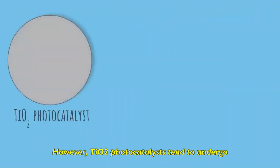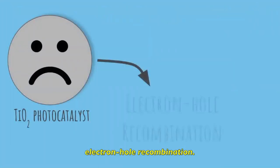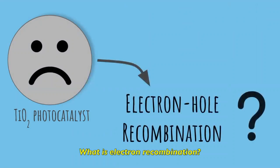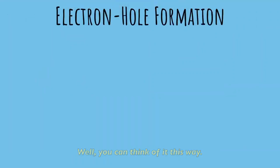However, TiO2 Photocatalysts tend to undergo electron-hole recombination. What is electron recombination? Well, you can think of it this way.